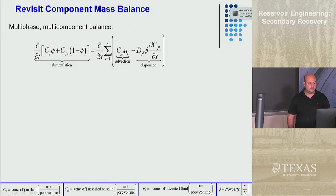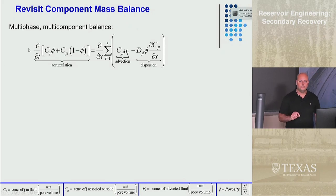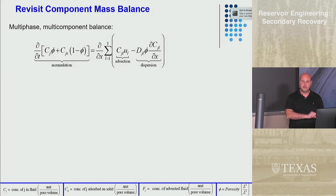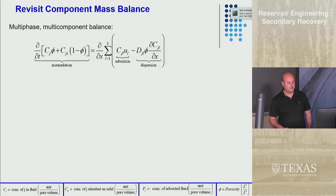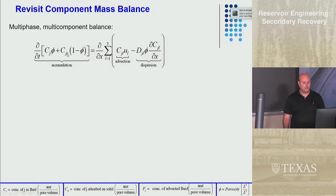B is porosity. Component J can occur in two different places: it can occur in the fluids — the aqueous phase, oleic phase, or gaseous phase, or all three — but it can also be adsorbed onto the rock surface. CJS is the concentration of component J adsorbed on S, the solid. The porosity is phi, and the rock volume is one minus phi.